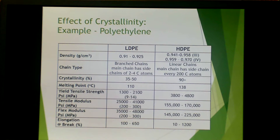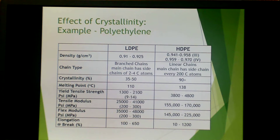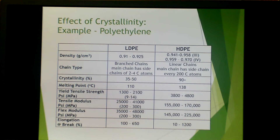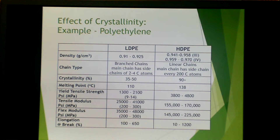This is an example of polyethylene: low density versus high density. Low density is less crystalline, whereas high density is more crystalline. LDPE has branched chains, whereas HDPE is linear. LDPE can range in crystallinity up to 50%, where HDPE can be 90-plus percent. HDPE has a much higher melting point, higher tensile yield stress, much higher tensile modulus, higher flexural modulus, and longer elongation at break.